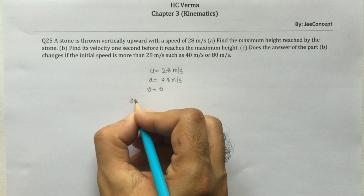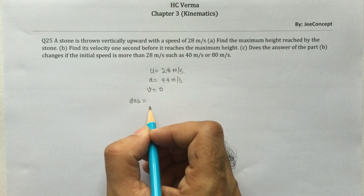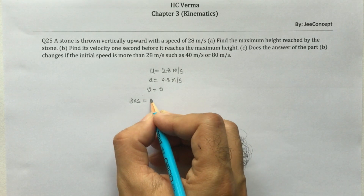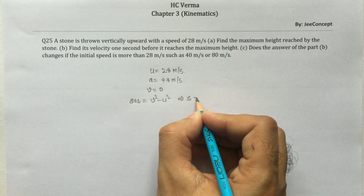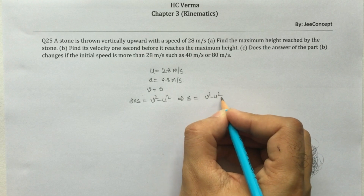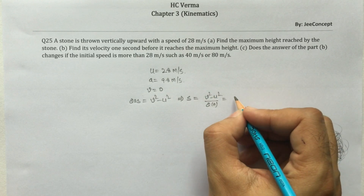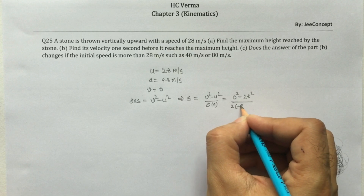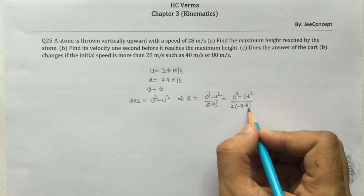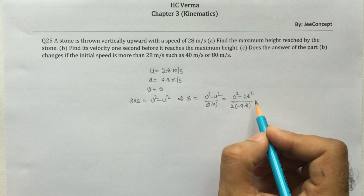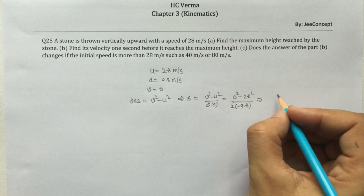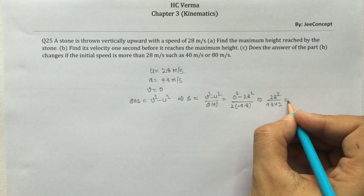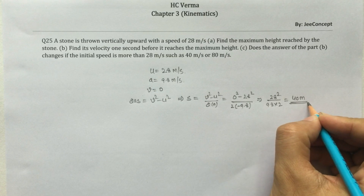We can calculate the maximum distance traveled using v² minus u² = 2as, so s = (v² minus u²) / 2a. Substituting: final velocity is 0, initial velocity is 28, acceleration is minus 9.8. This gives s = 28² / (9.8 × 2), which equals 40 meter. So the maximum height achieved by the stone is 40 meters. This is part A.